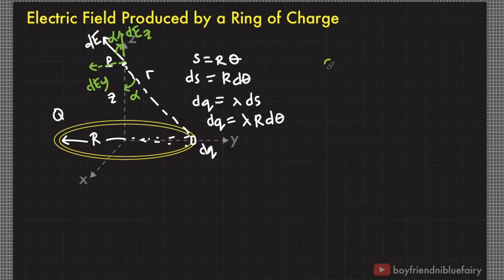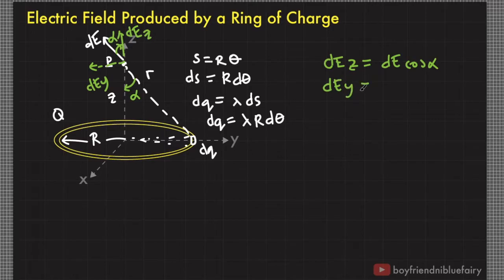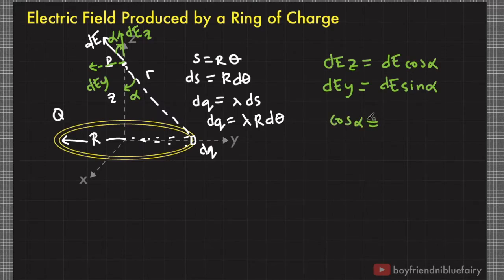Based on the figure, the z-component of the electric field is equal to dE cosine alpha, while the component perpendicular to the z-axis is equal to dE times sine alpha. We can calculate cosine alpha and sine alpha from the given lengths R and z. Cosine alpha equals z over r, and sine alpha equals the radius of the ring R divided by the hypotenuse r.